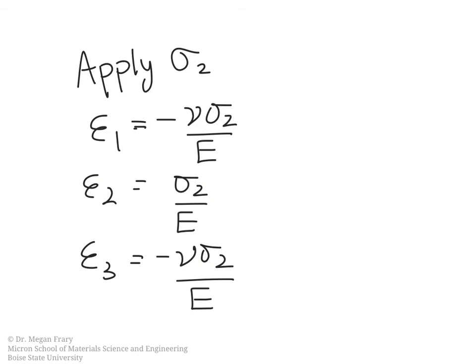So now what we do is we go through and we add up, for example, the epsilon one terms for all of the stresses. So we're going to sum over all of the stresses. Then we're going to do the same for the epsilon twos and the same for the epsilon threes. So let's take a look at what those equations are in the end.